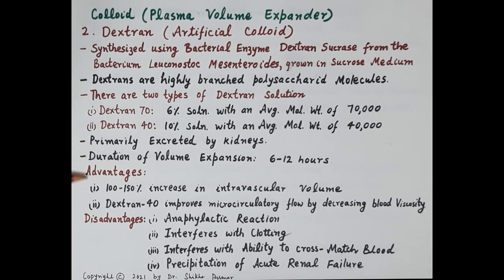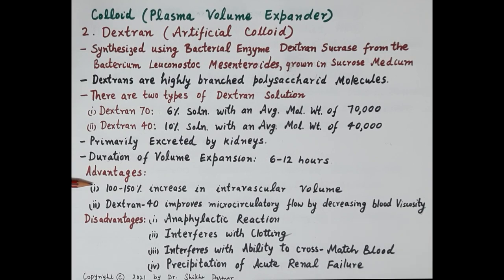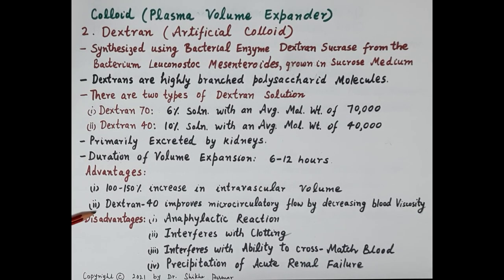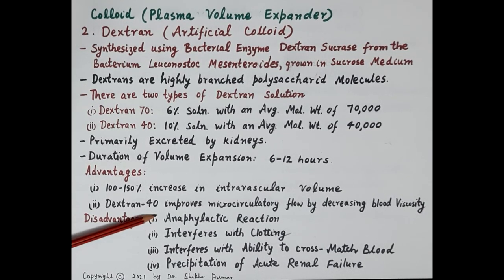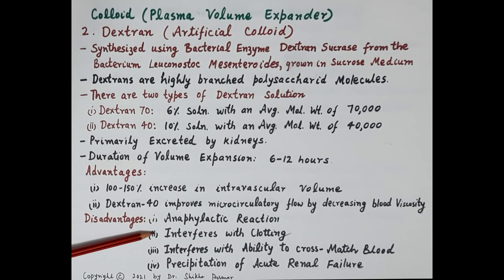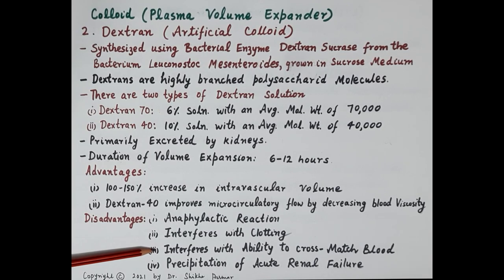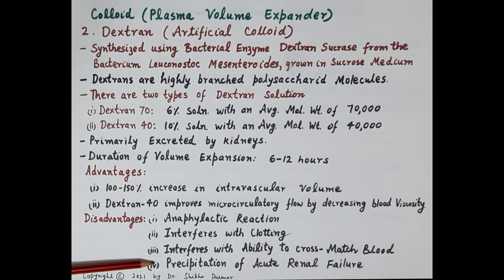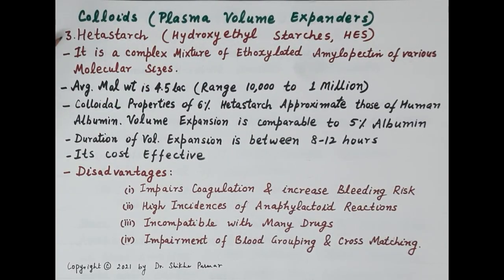Dextran leads to a 100 to 150 percent increase in intravascular volume. Dextran 40 improves microcirculatory flow by decreasing blood viscosity. Disadvantages include anaphylactic reactions, reduced platelet aggregation that interferes with clotting, and bleeding complications at larger doses. Dextran forms a coating over red blood cells, interfering with the ability to cross-match blood. Since it is primarily excreted by the kidneys, it can precipitate acute renal failure if renal damage pre-exists.